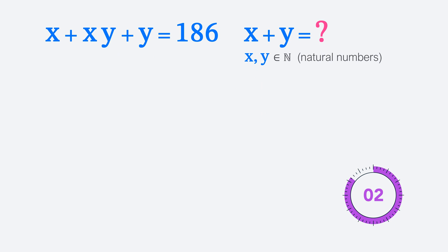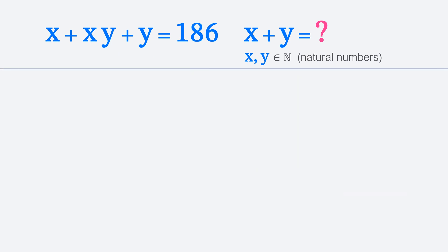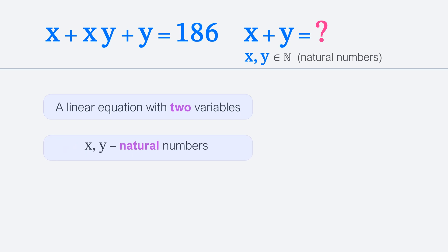I'll show you one of the solutions that can be applied to math problems like this. We can see one linear equation with two variables x and y. But we know that x and y are natural numbers and we need to find the sum of x and y. One of the solutions to this type of math problem is to represent the left side of the equation as a product of factors, including the variables x and y, and the right side as a product of constants. So, let's do that.